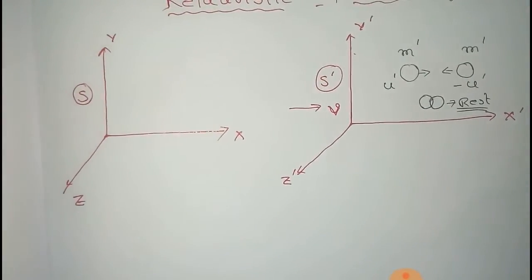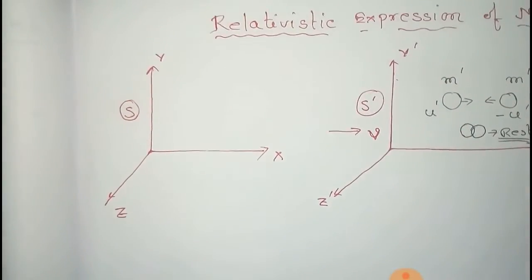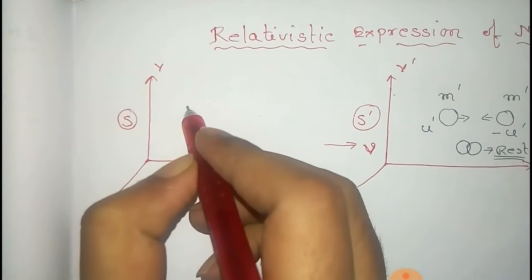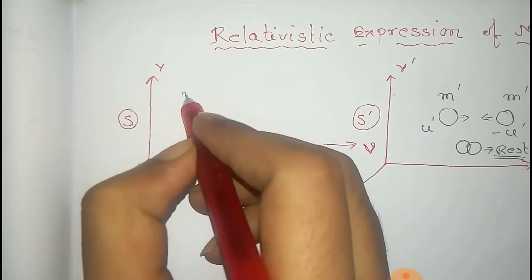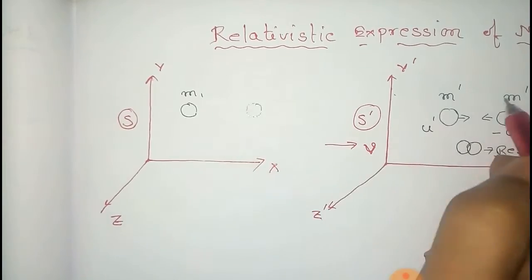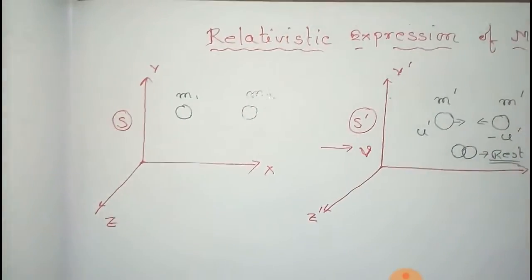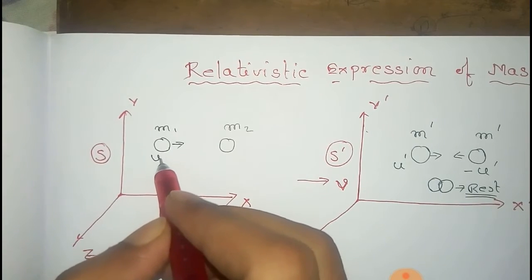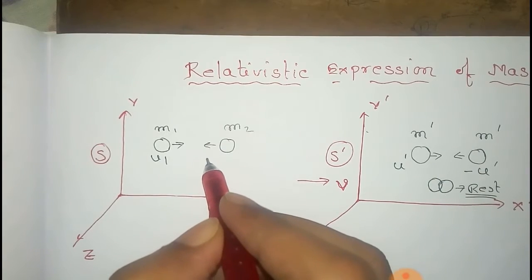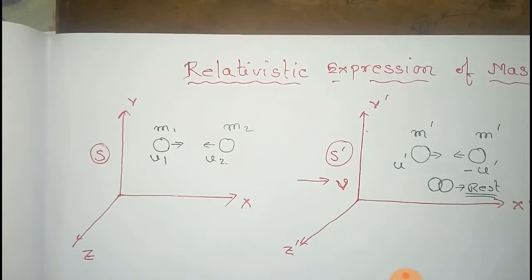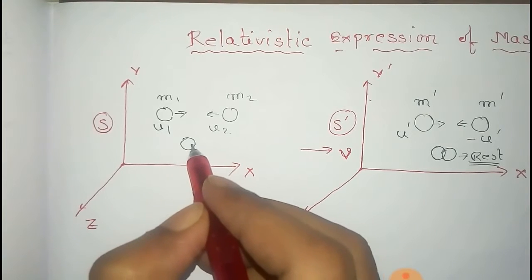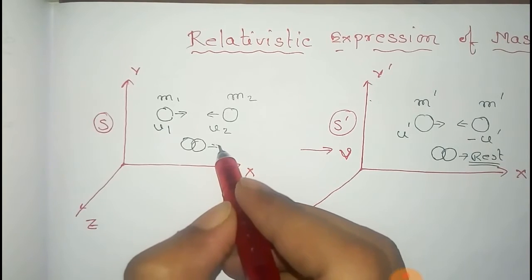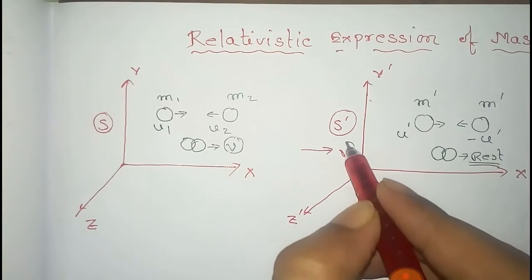After collision, the velocity of the combined particle would be zero because they would be at rest. But for an observer in the S frame, this case will not be the same. The first mass would be m1, the second mass would be m2, and after collision the product will not be at rest — it has velocity v, the velocity of the S prime frame.